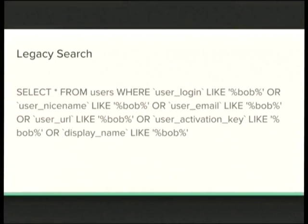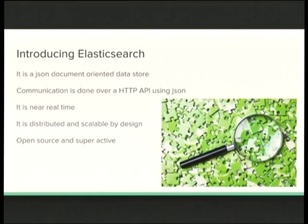That's basically how our search was looking before — it's really nice when you look at it, but it's not really working and not really scalable. So a year and a half ago we started using Elasticsearch, which had just released version 1.0 when we started. Elasticsearch is a JSON document-oriented data store.